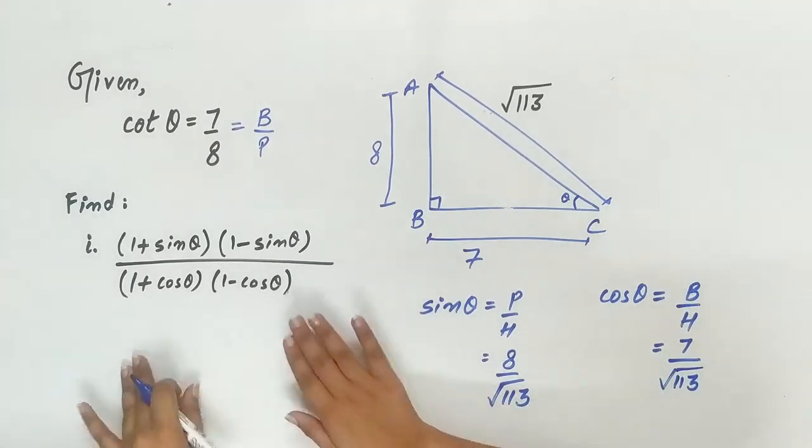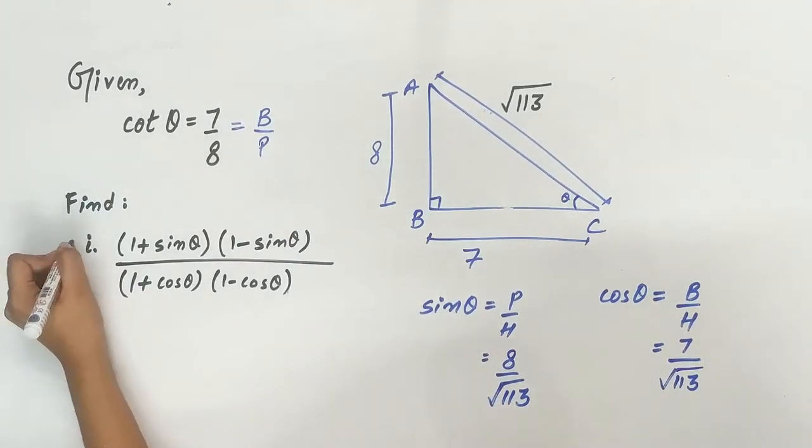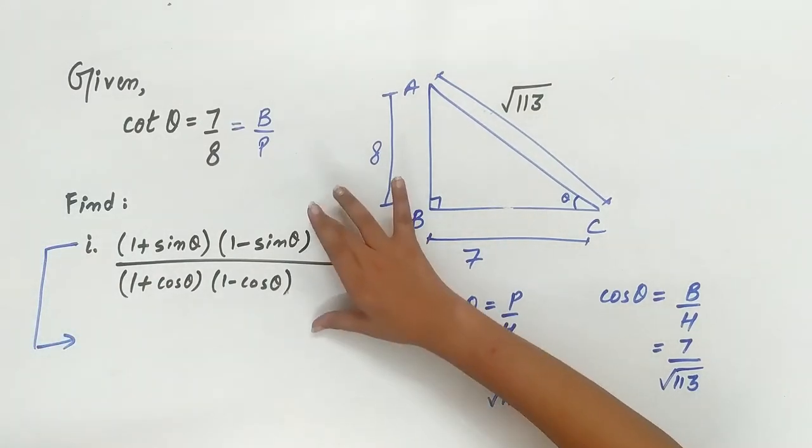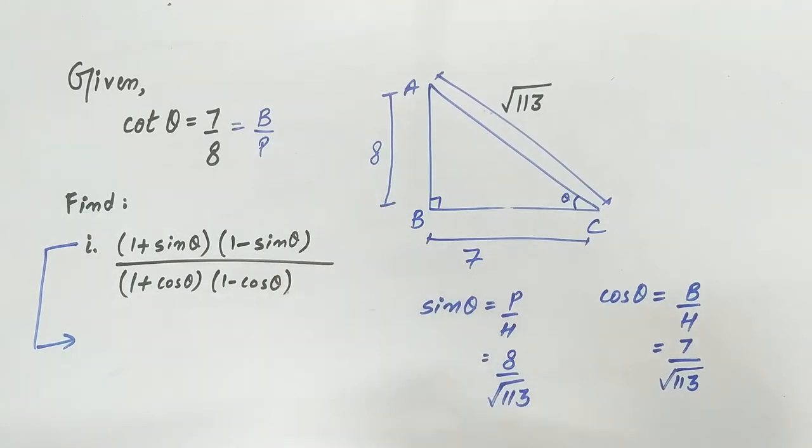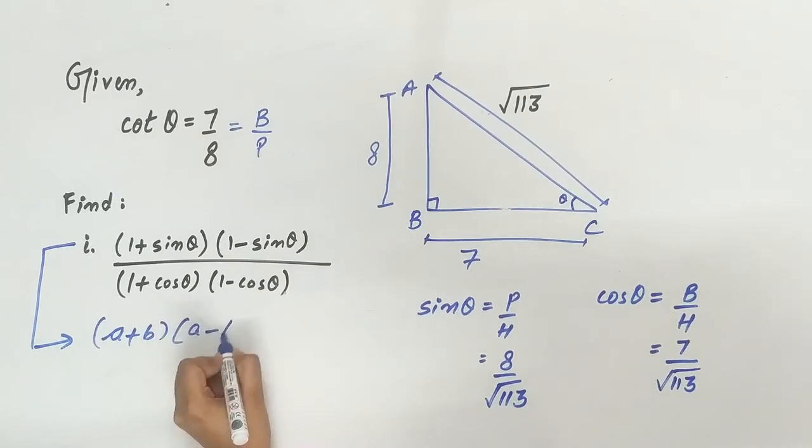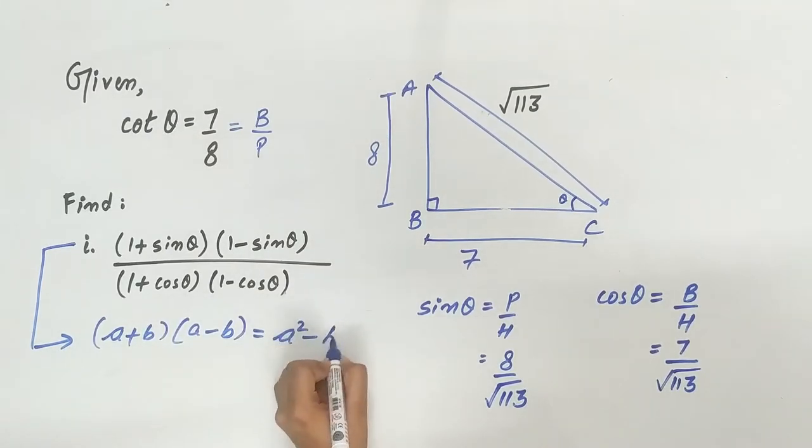Let's substitute the values. Before substituting the values, we can simplify the expression. Remember the identity? A plus B multiply A minus B is equal to A square minus B square.